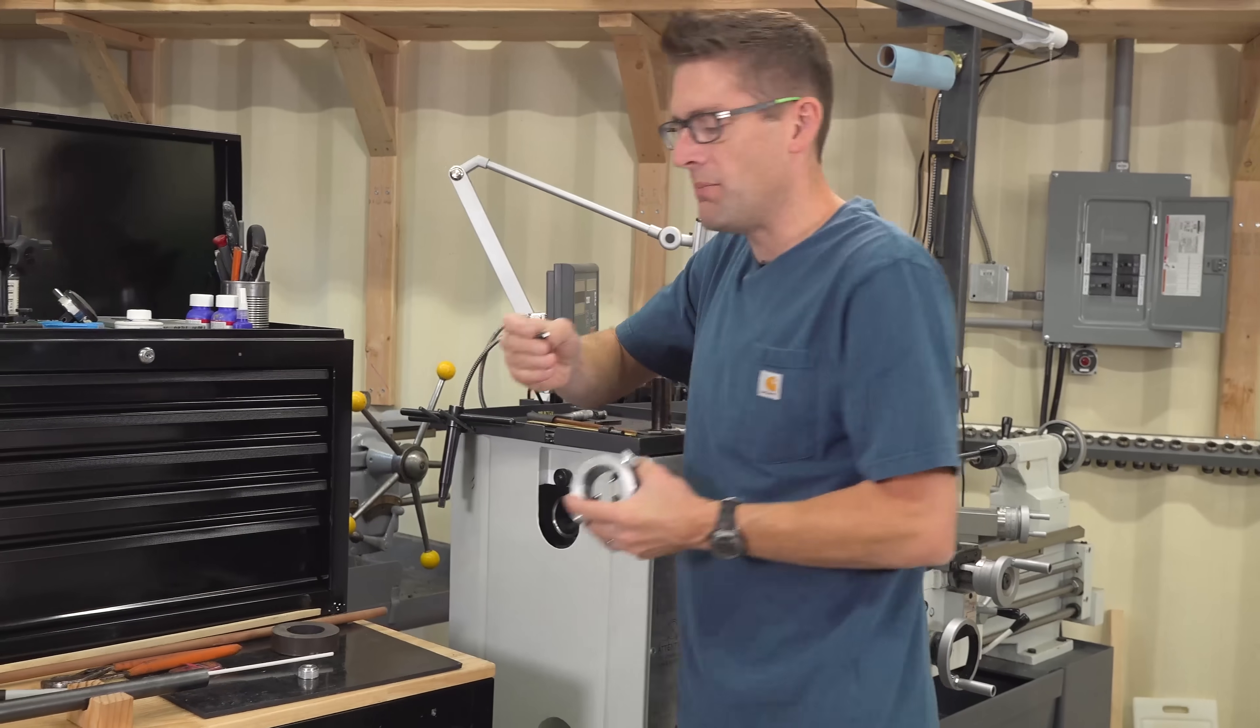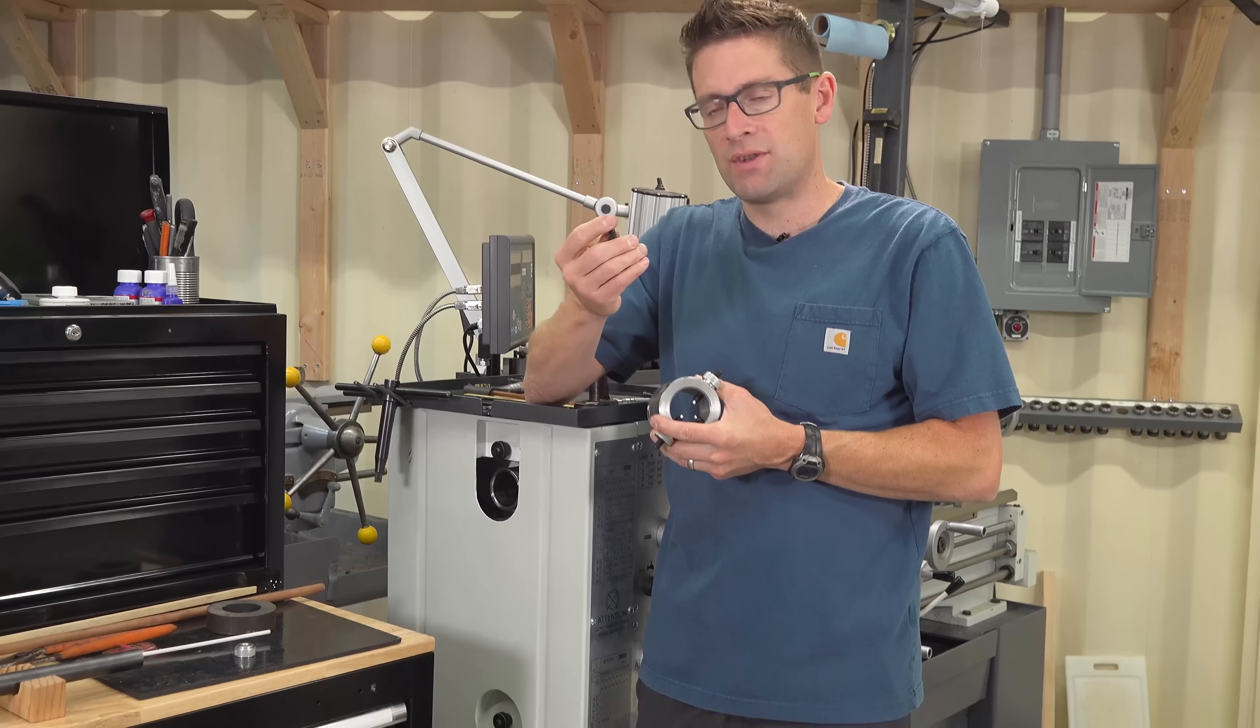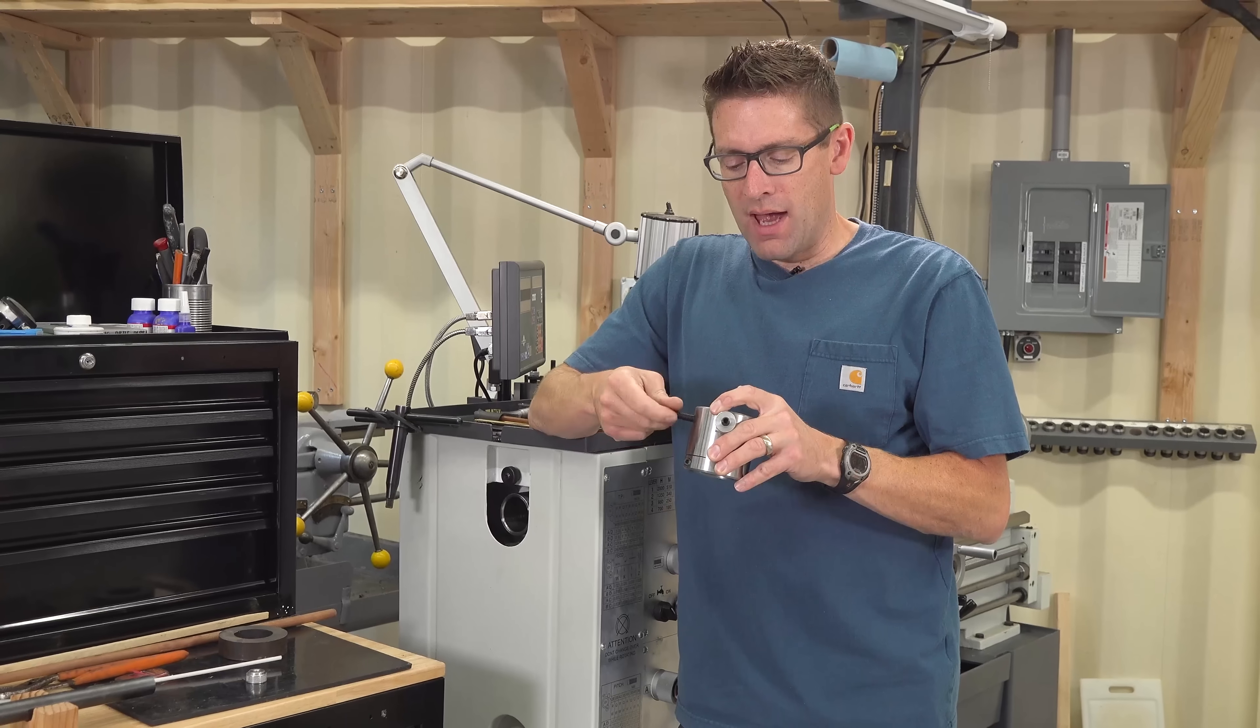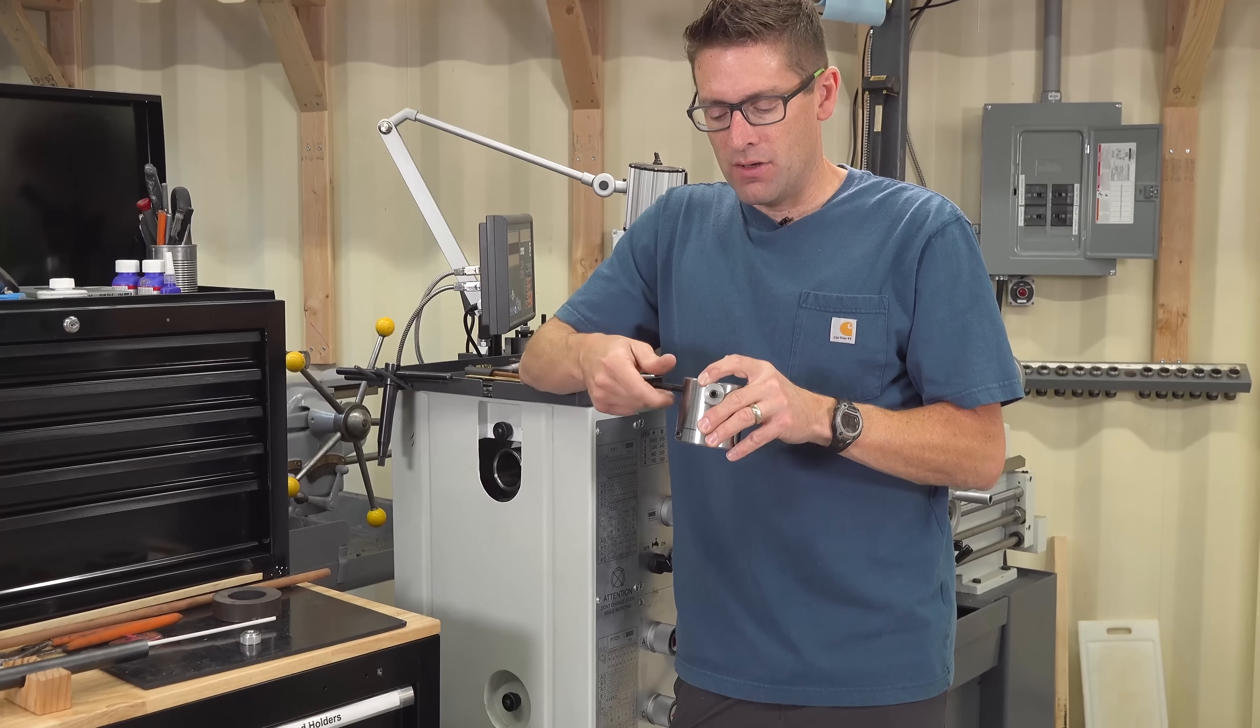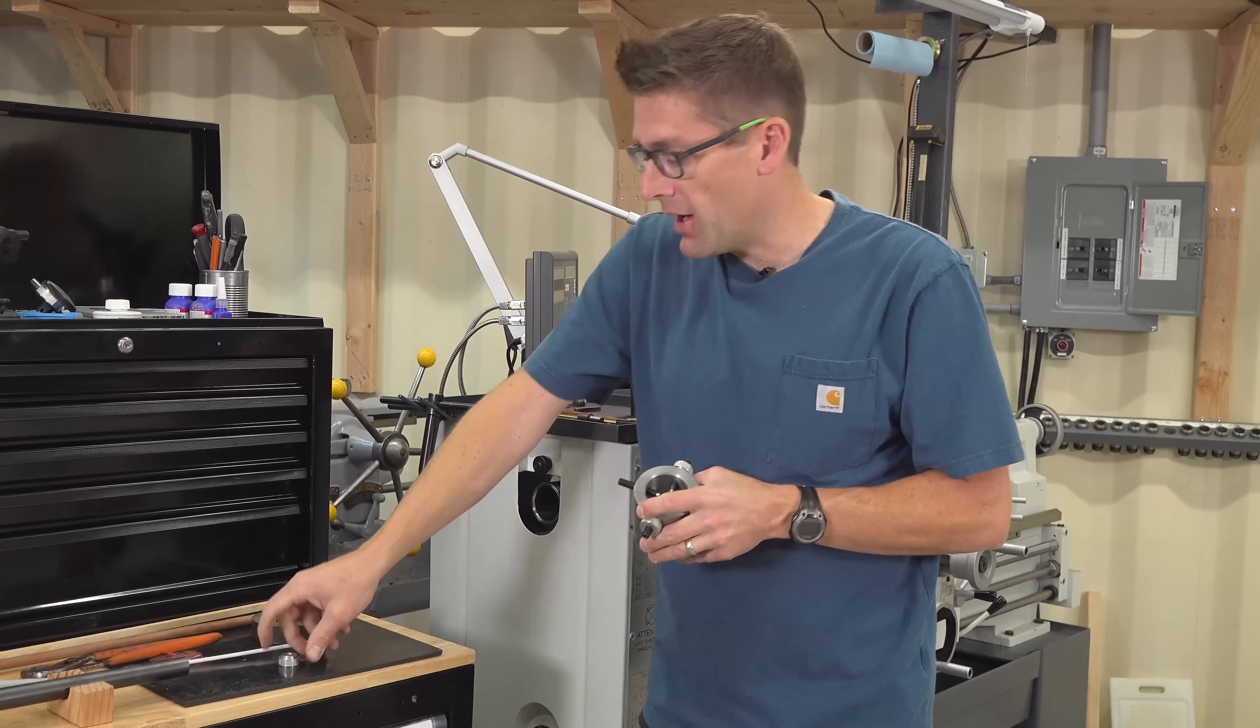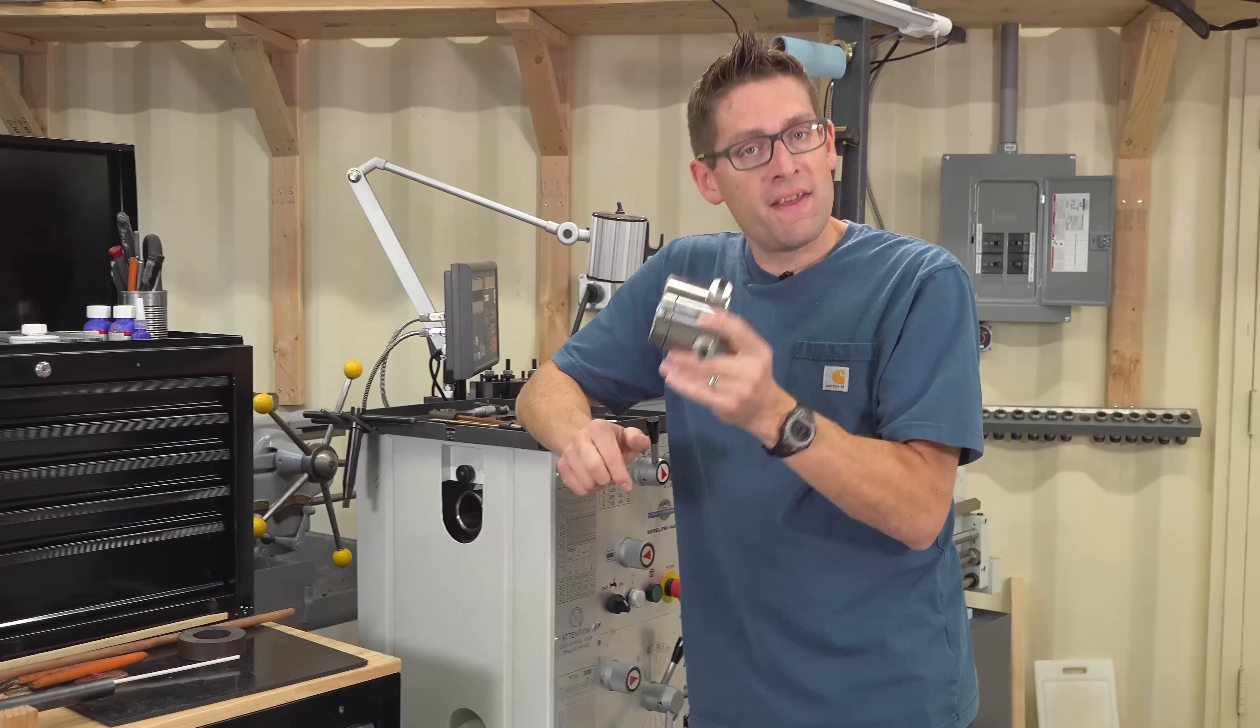So I've seen people do brass tips. My last lathe spider I built, I used brass tip screws. Kind of doesn't really matter. It might depend more on what you have on hand. The aluminum does work really, really well. So that's how the lathe spider went together.